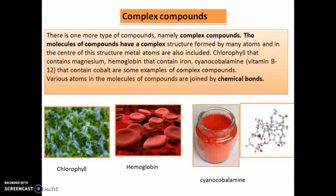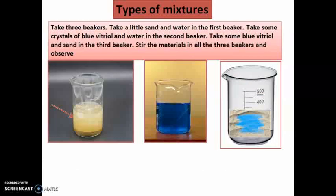Some examples of complex compounds: chlorophyll, which contains the metal magnesium and is present in plants; hemoglobin, present in our blood, which contains iron; and cyanocobalamin, which is vitamin B12, contains cobalt. So these are examples of complex compounds. We have studied organic, inorganic, and complex compounds — three types of compounds in total.